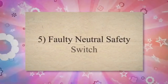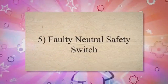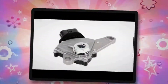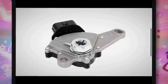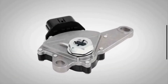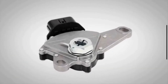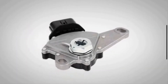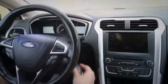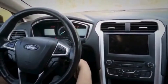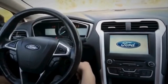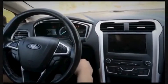5. Faulty Neutral Safety Switch. The neutral safety switch ensures that the vehicle can only be started in the park or neutral position, or with the clutch pedal depressed. If the switch is faulty, it may prevent the engine from cranking.